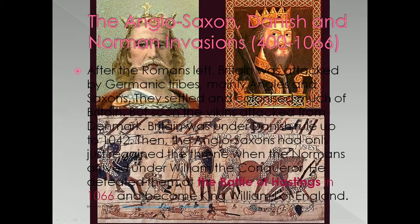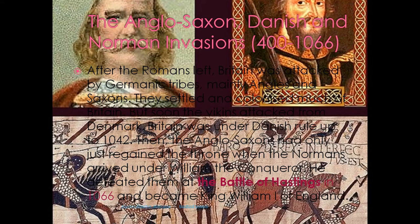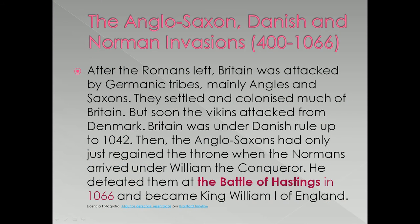The Anglo-Saxon, Danish and Norman Invasions. After the Romans left, Britain was attacked by Germanic tribes, mainly Angles and Saxons. They settled and colonised much of Britain. But soon the Vikings attacked from Denmark. Britain was under Danish rule up to 1042. Then the Anglo-Saxons had only just regained the throne when the Normans arrived under William the Conqueror. He defeated them at the Battle of Hastings in 1066 and became King William I of England.